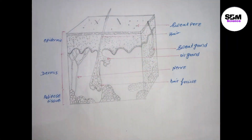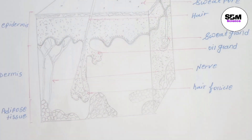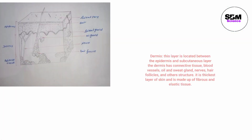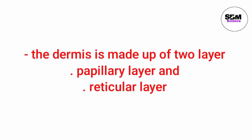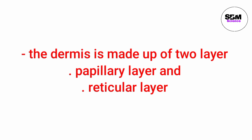The next layer of skin is the dermis, located between the epidermis and subcutaneous layer. The dermis has connective tissue, blood vessels, oil and sweat glands, nerves, hair follicles, and other structures. It is the thickest layer of skin and is made up of fibrous and elastic tissue. The dermis is made up of two layers: the papillary layer and the reticular layer.